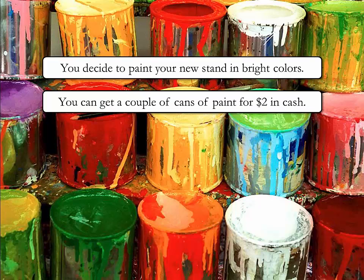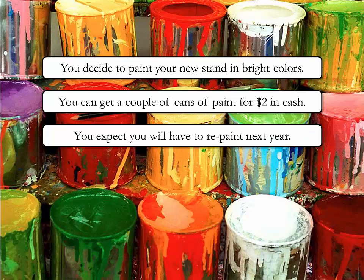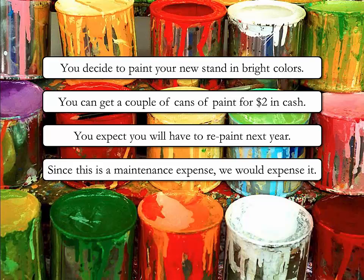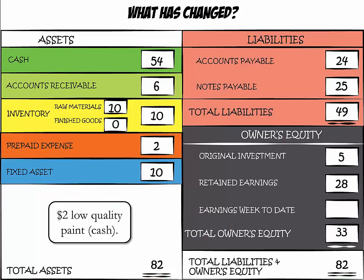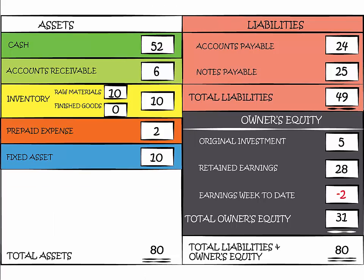You decide your stand could use some color, so you buy a couple of cans of paint for $2 in cash. The paint is not high quality and will need to be repainted next year, so this is considered a maintenance expense and we are able to expense it. Cash goes down to $52 from $54, and since paint is an expense, our earnings are now negative.